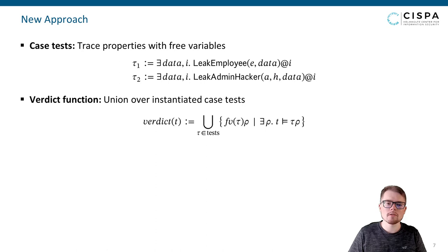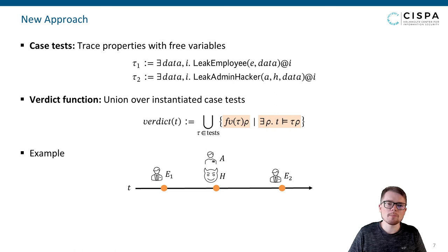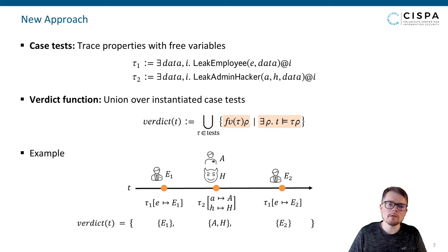The verdict function is then implicitly defined as the union of all possible instantiations over all specified case tests. If there exists an instantiation for a case test such that it holds on a trace, the verdict contains a group of all instantiated parties of this case test. In our example, consider the situation in which two employees exposed the data independently and a hacker with the help of an administrator. The first case test matches twice, instantiating the free variable e with e1 and e2 respectively; the second matches once by instantiating the free variables with a and h. The verdict rightly accuses the two employees alone and the admin and hacker jointly.